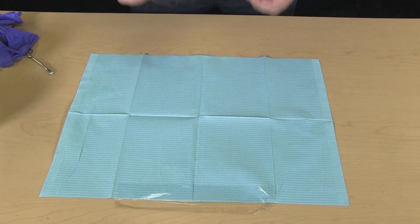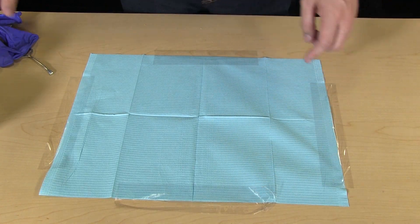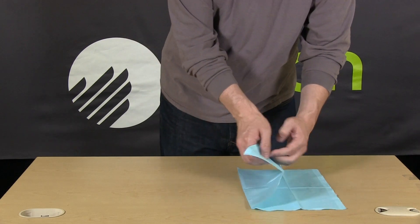On a clean flat surface, tape down the work mat. An unsecured work mat will make it difficult to use impression material later on.